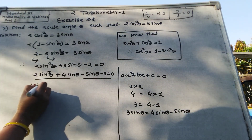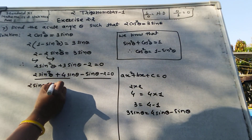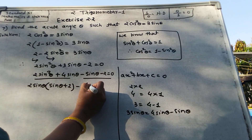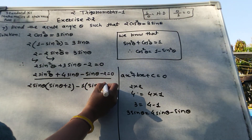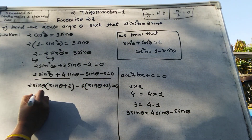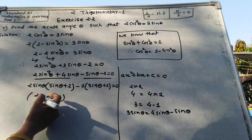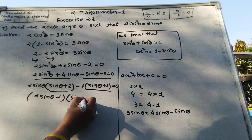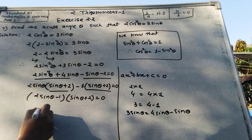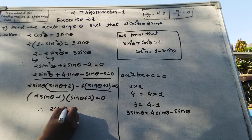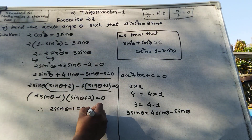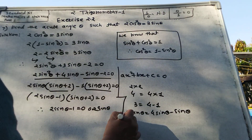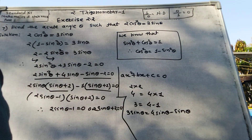Grouping the terms: 2 sin theta times (sin theta plus 2) minus 1 times (sin theta plus 2) equals 0. Taking (sin theta plus 2) as a common factor: (2 sin theta minus 1)(sin theta plus 2) equals 0.